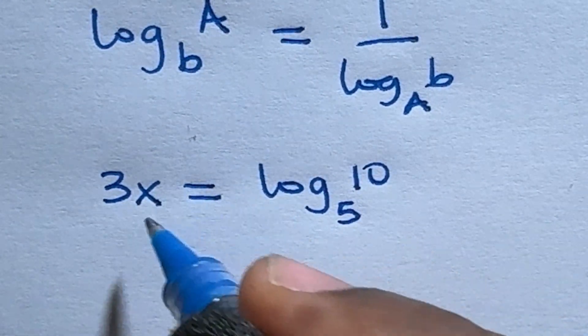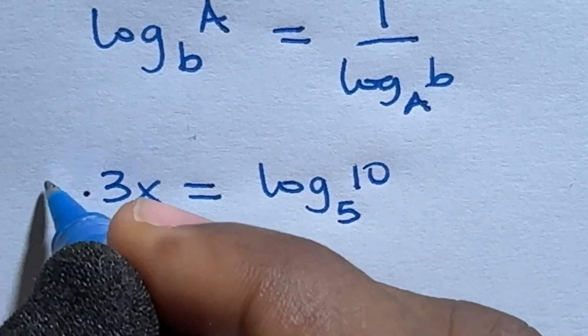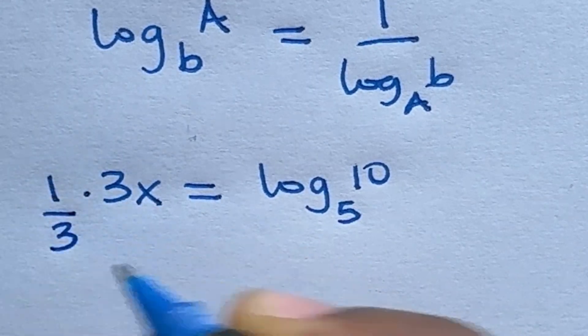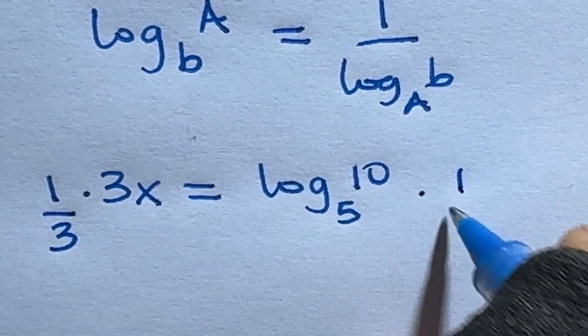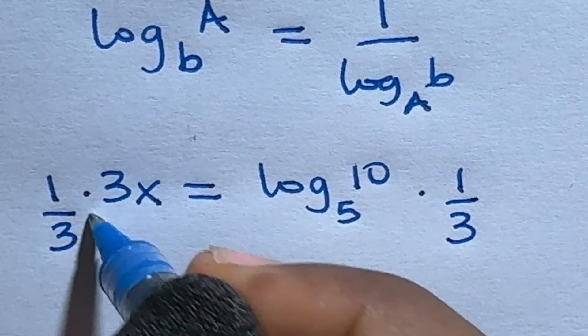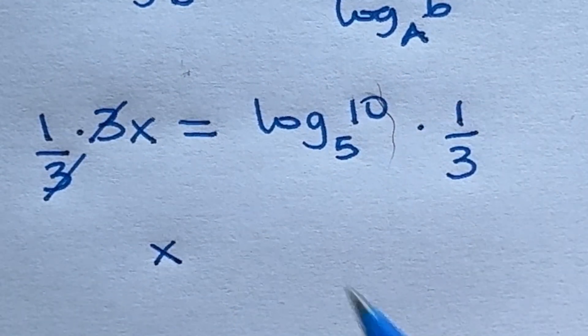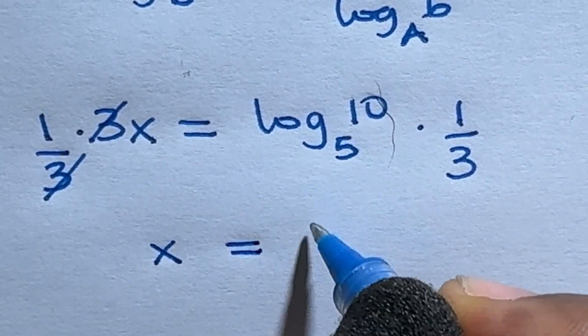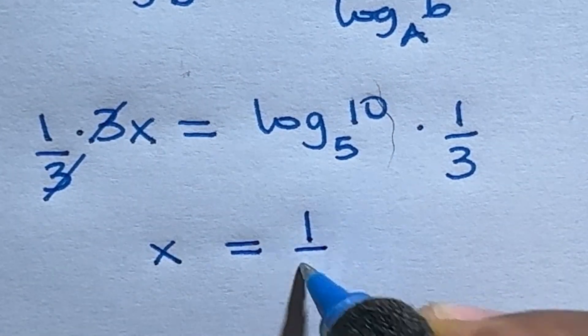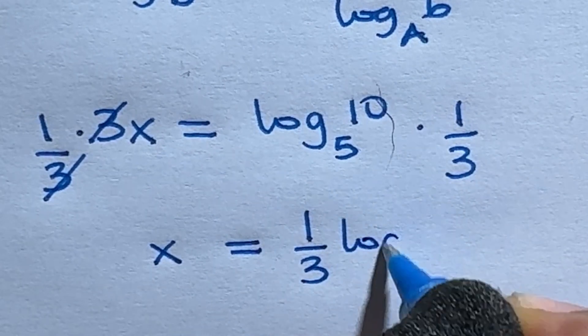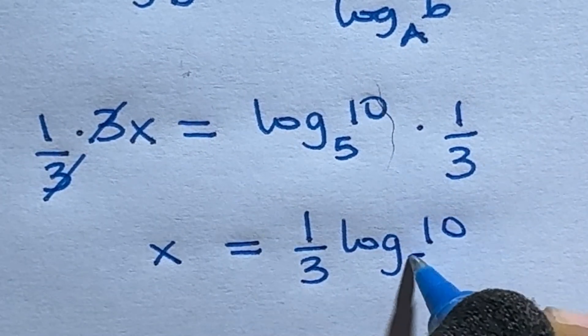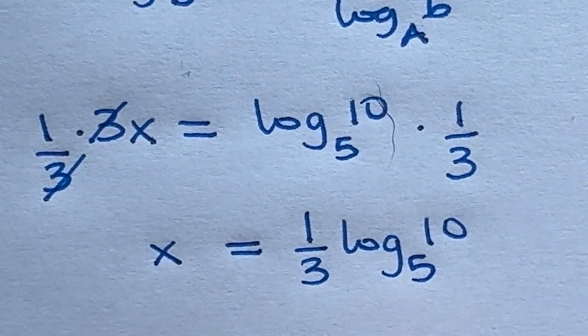And to get x, we now need to multiply both sides by 1 over 3. Multiply both sides by 1 over 3. So that you now have x on the left hand side is equal to 1 over 3 log 10 base 5. This is our final answer.